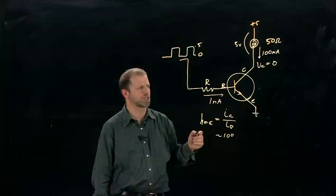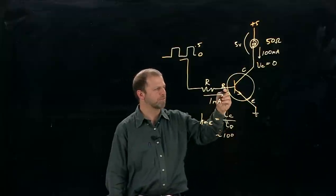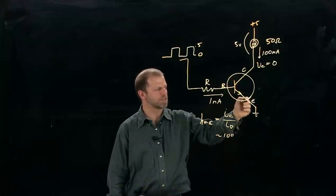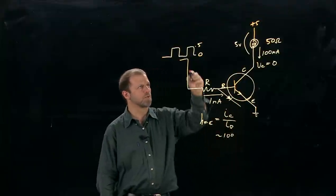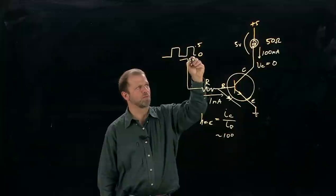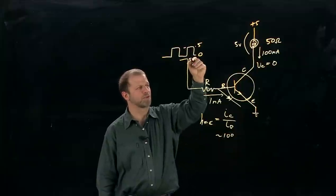How are we going to arrange that? Well, to be careful about it, you'd say this junction, the base to emitter junction, is as if it had a diode there. So you've got five volts here when the signal is high, you've got five volts as the input signal.